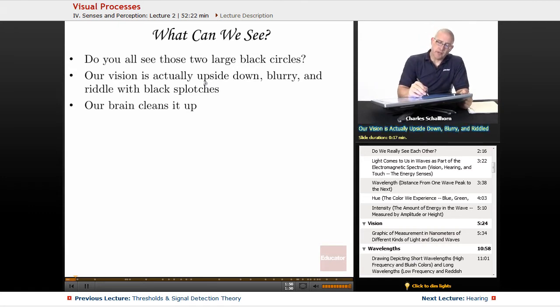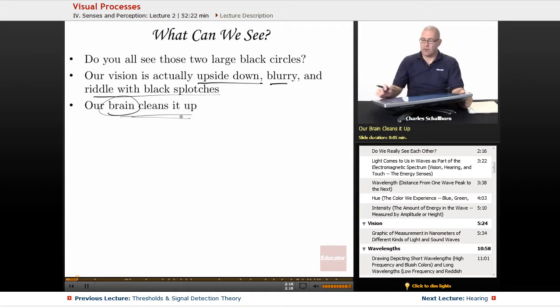And did you know that our vision is upside down, blurry, and riddled with black splotches? We don't see clearly now, even though the rain is gone. We see blurry. It's terrible. But our brain cleans it up. Our brain is kind of nice that way.